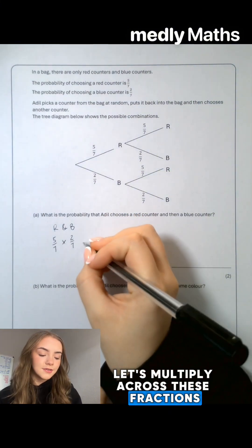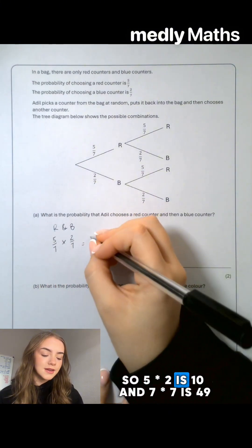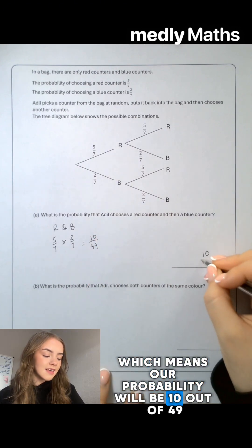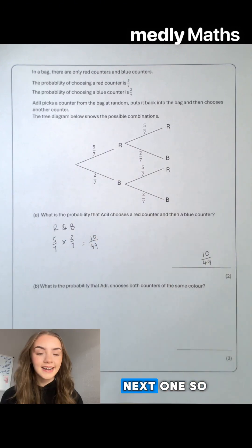Let's multiply across these fractions. So 5 times 2 is 10 and 7 times 7 is 49, which means our probability will be 10 out of 49. Next one.